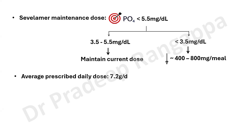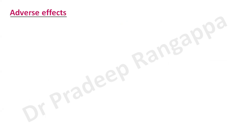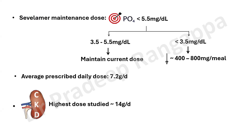The average prescribed daily dose is around 7.2 grams per day. In chronic kidney disease where phosphate is a major problem, the highest tolerable dose studied has been up to 14 grams per day.